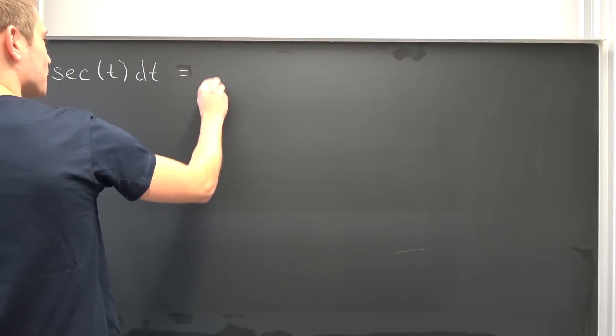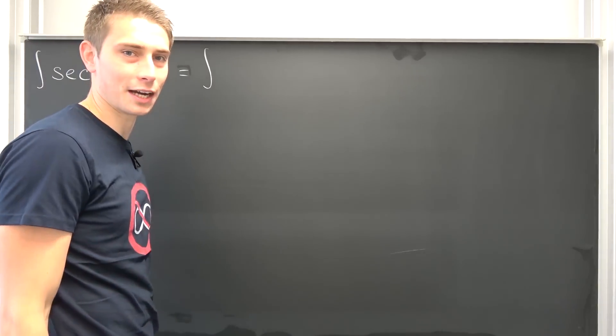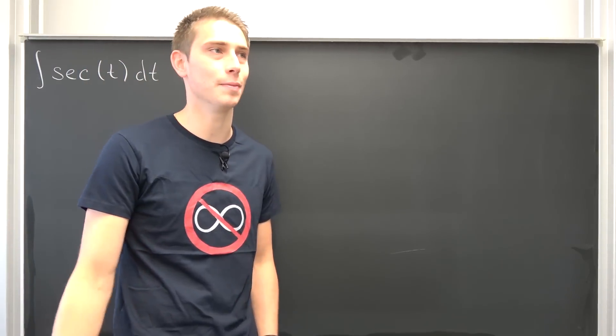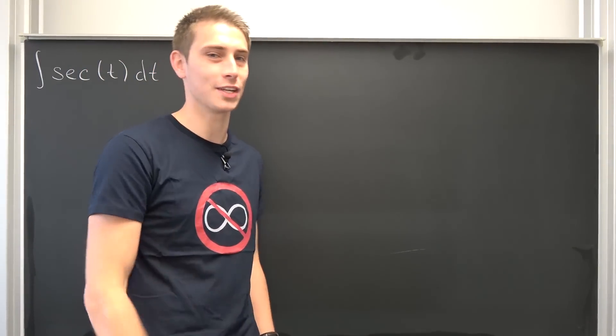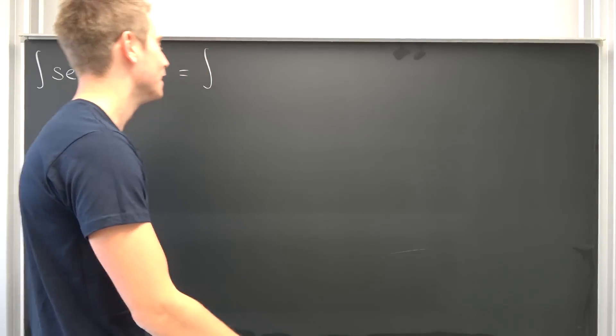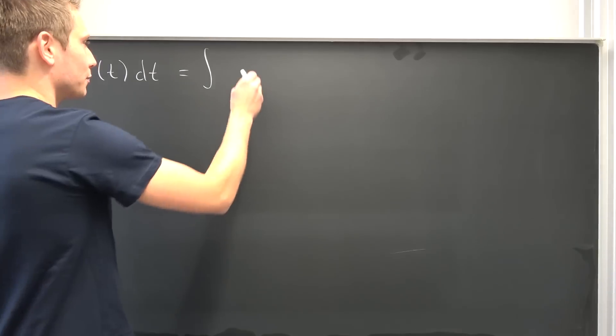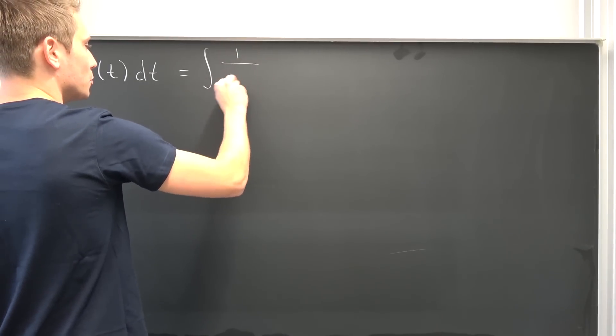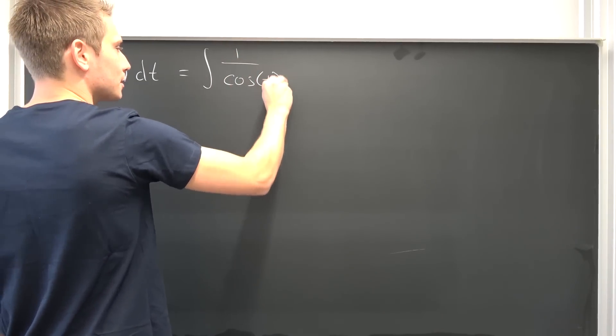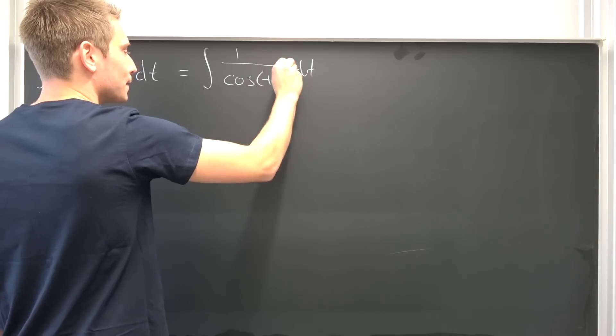At first, let us rewrite this. I'm going to show you the method I use. I just can't remember the result of this thing. It's something with natural log. That's the only thing I know. Never mind, I always have to derive it yet again. So this is 1 over the cosine of t, integrated with respect to t.